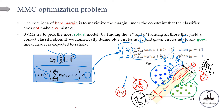One important thing to emphasize about the MMC optimization problem: we can either satisfy this constraint or not. This constraint means we are not allowing for any misclassification within the margin. There is either a solution to this optimization problem or there isn't. If there's no solution, we have to sacrifice the hard margin idea and expand to soft margin.